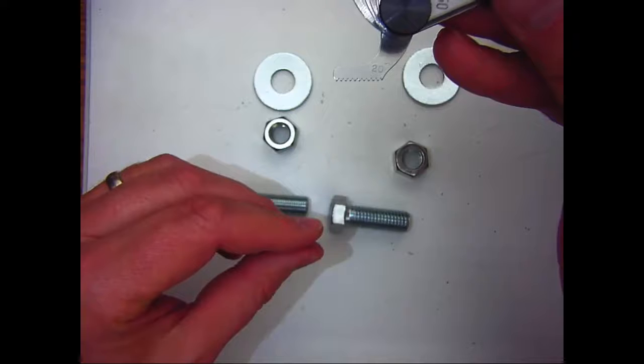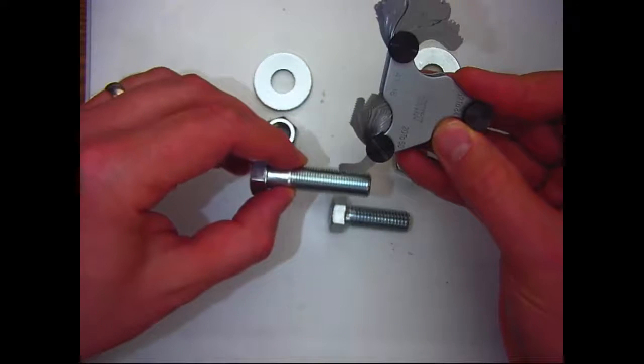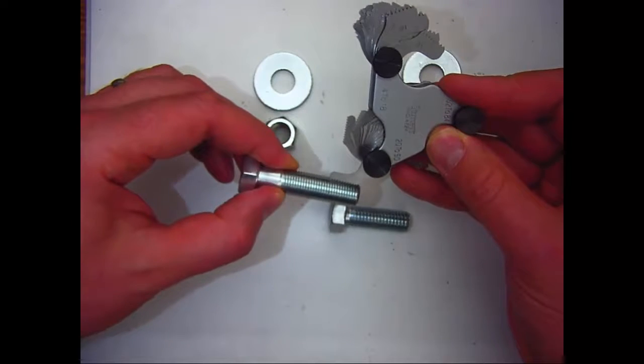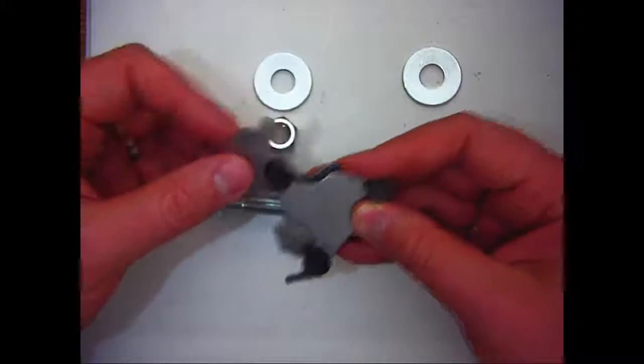This one can measure coarse threads from 4 TPI to a very fine 84 TPI. I'm showing the 20 TPI leaf and how it fits nicely on our bolt.